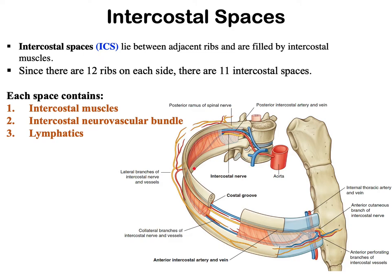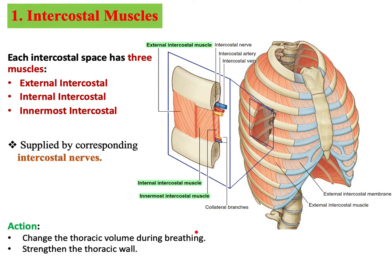Let us start with the intercostal spaces. When you say intercostal spaces, that means you are indicating spaces located between the adjacent ribs. These spaces are filled by intercostal muscles, intercostal veins, nerves, arteries, and lymphatics — muscles, blood vessels, and nerves inside these spaces. We call them neurovascular bundles: intercostal arteries, intercostal veins, and intercostal nerves.